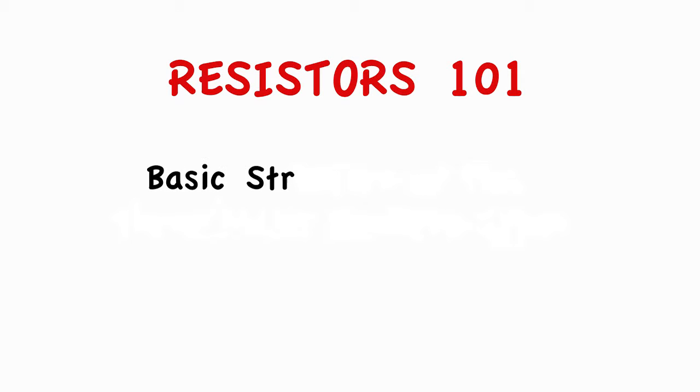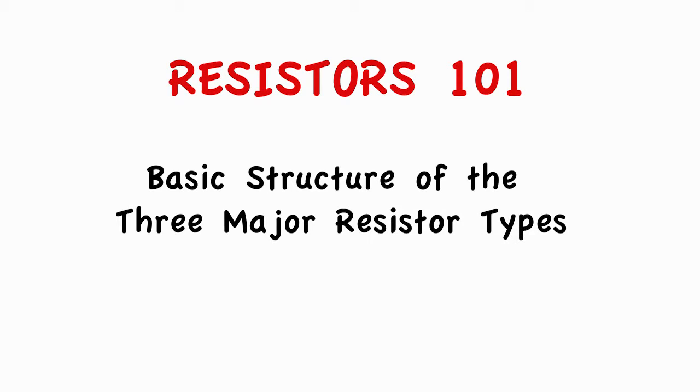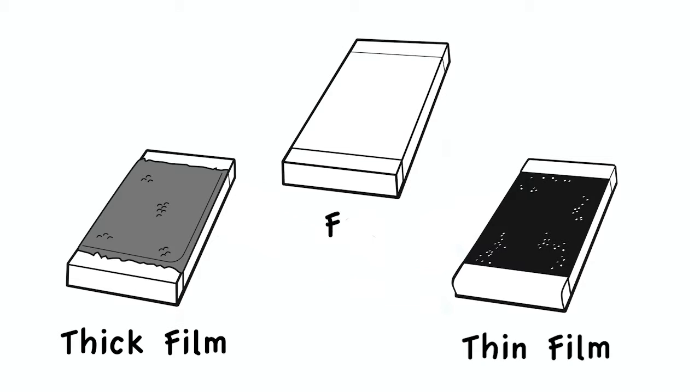Let's do a fast review of resistor class 101 and take a look at the basic structure of the three major resistor types: thin film, thick film, and foil.